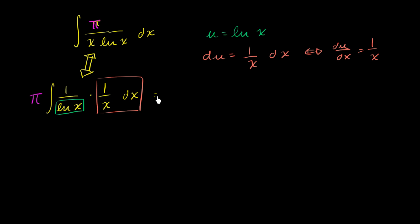So let's rewrite this integral. It's going to be equal to pi times the indefinite integral of 1 over u, since natural log of x is u, times du. Now this becomes pretty straightforward. What is the antiderivative of all of this business?